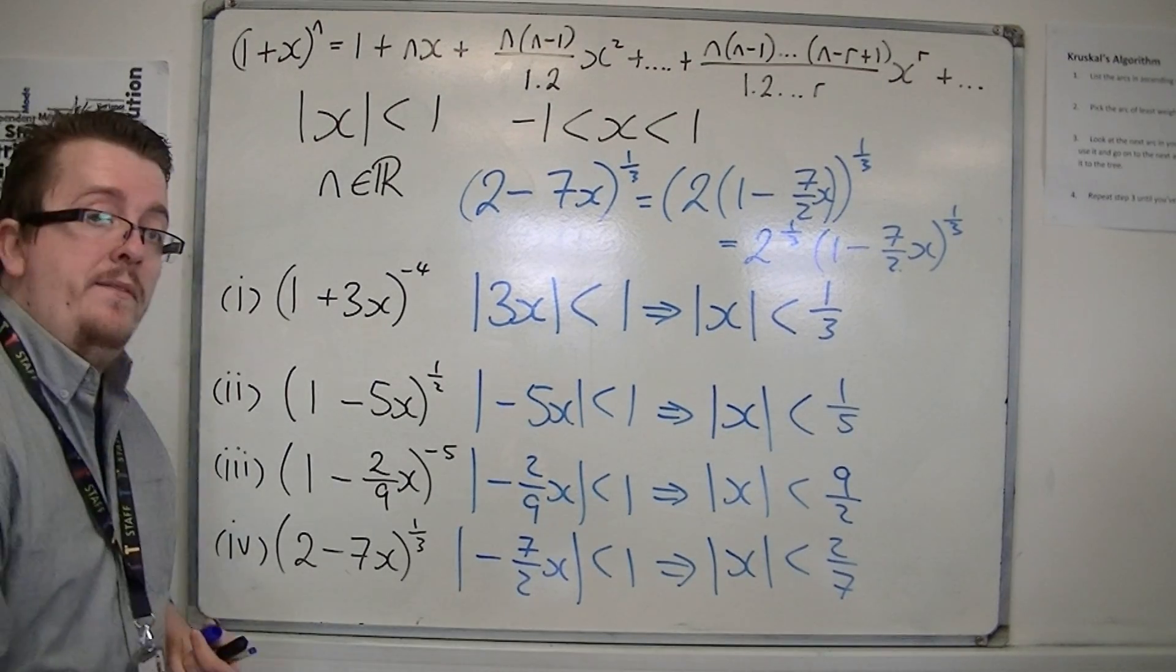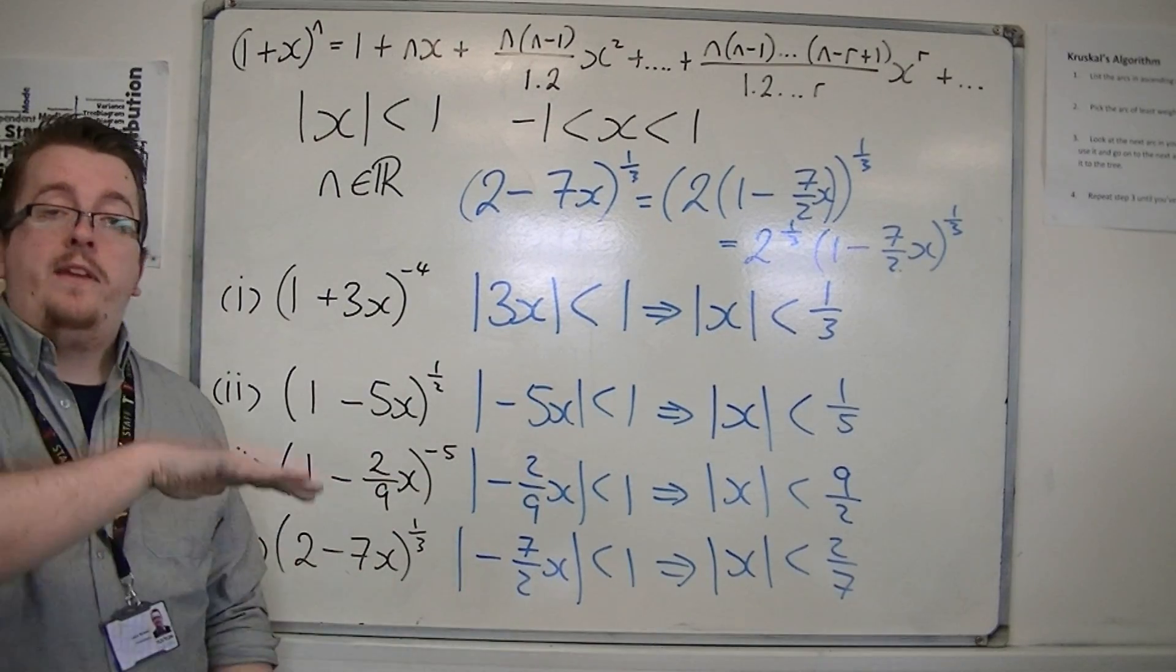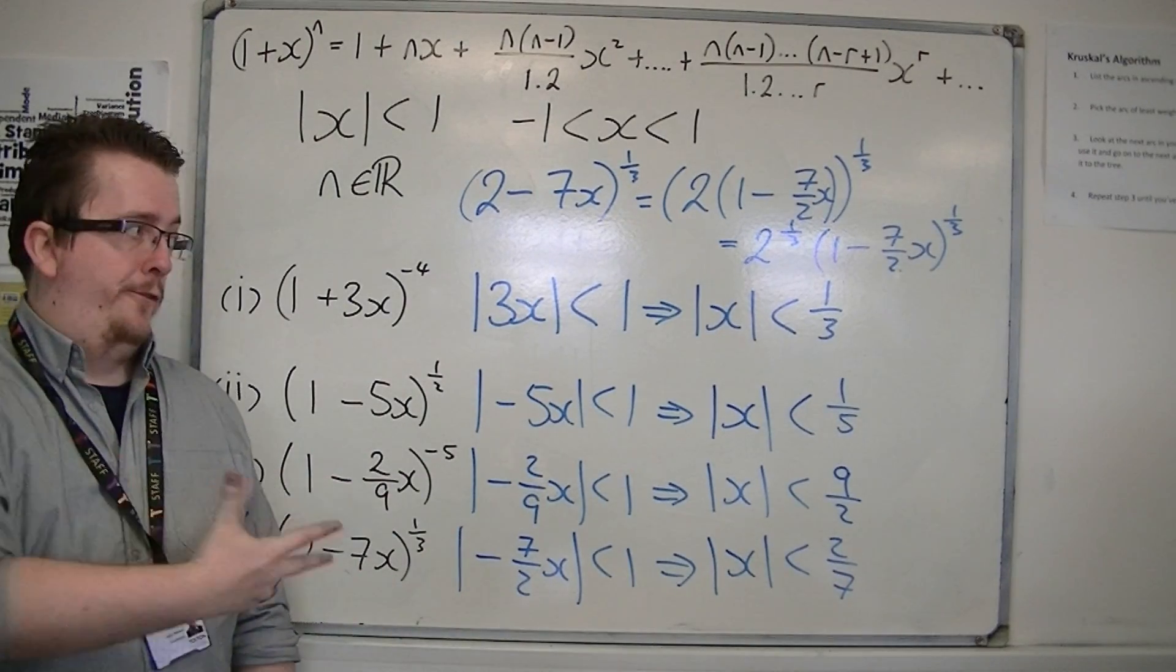Between minus 2 sevenths and positive 2 sevenths. And that is how we can write down the range of validity for a binomial expansion of this type.